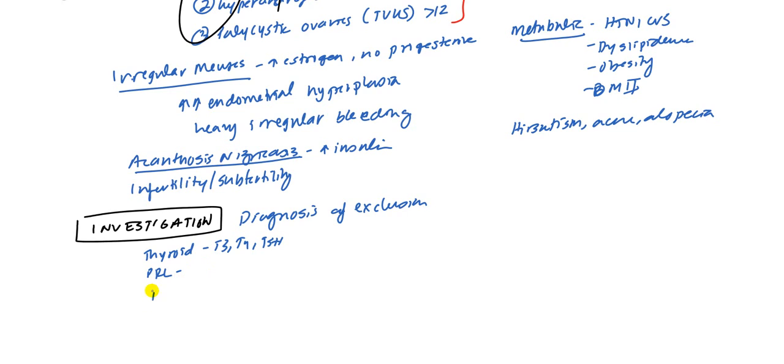You want to rule out primary ovarian failure. With this one they'll have high FSH, high LH, and high estrogen, which is different than polycystic ovarian disease where your LH will be twice your FSH and your estrogen and testosterone will be high.